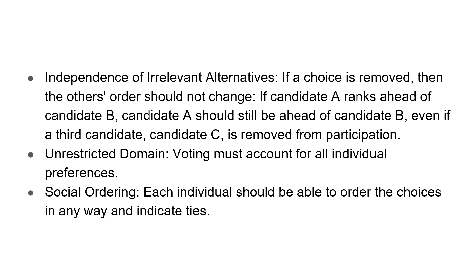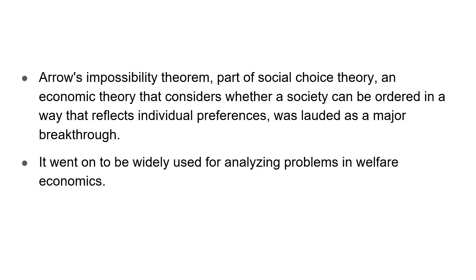Next is unrestricted domain, which says that voting must account for all individual preferences. Then we have social ordering, which says that each individual should be able to order the choices in a way and indicate ties. These were the different conditions that Arrow specified, and he says that it is impossible to achieve a social ordering by satisfying all of them.